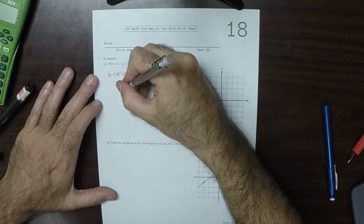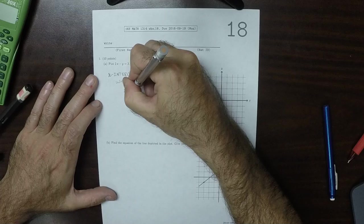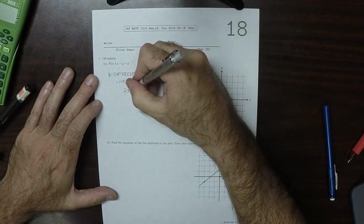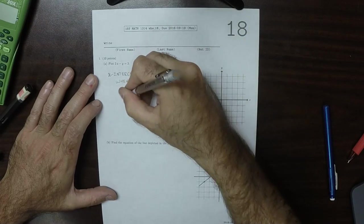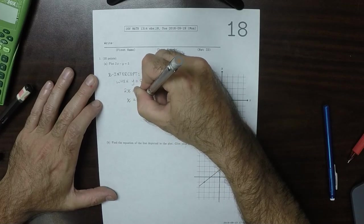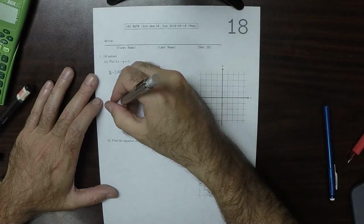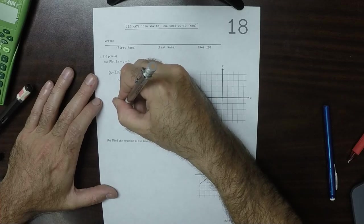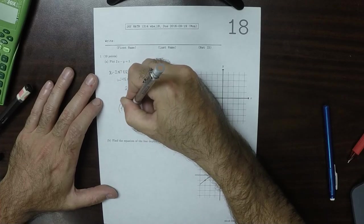So plugging in y is 0, that gives us the equation 2x is 3, so x is 1.5. So there is an x-intercept at 1.5 comma 0.